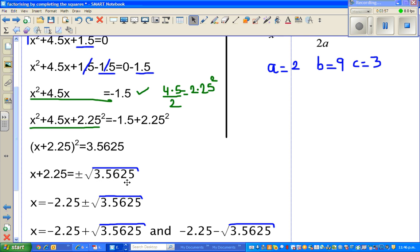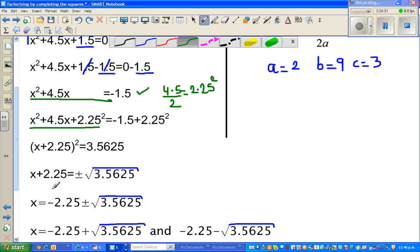Then I take away 2.25 from this side, minus 2.25. I have to do the same thing on the other side, so minus 2.25 from this side.